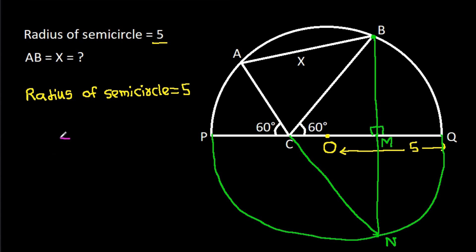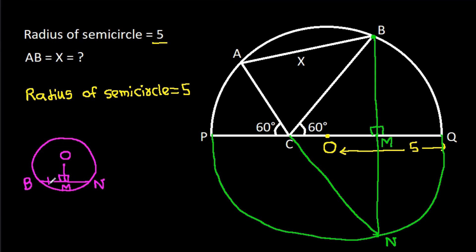In any circle, if BN is any chord and O is the center, and if we draw a perpendicular from O on BN — suppose this point is M — then BM will be equal to MN, and OM is perpendicular to BN. That means BM is equal to MN.